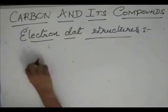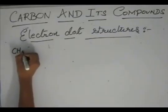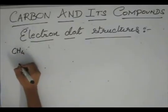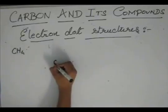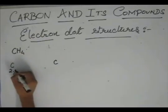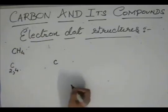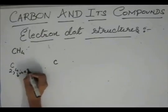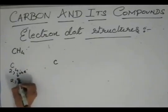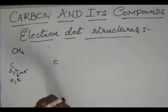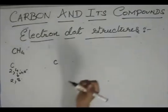Suppose we have a molecule of methane, CH4. Now, C has an electronic configuration of 2, 4, so it needs 4 more electrons to become 2, 8. So it takes 1 electron each from hydrogen.